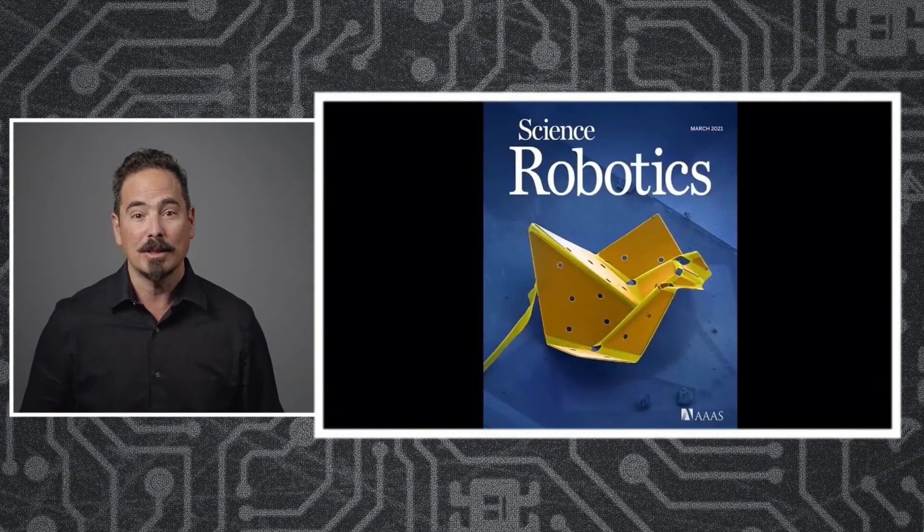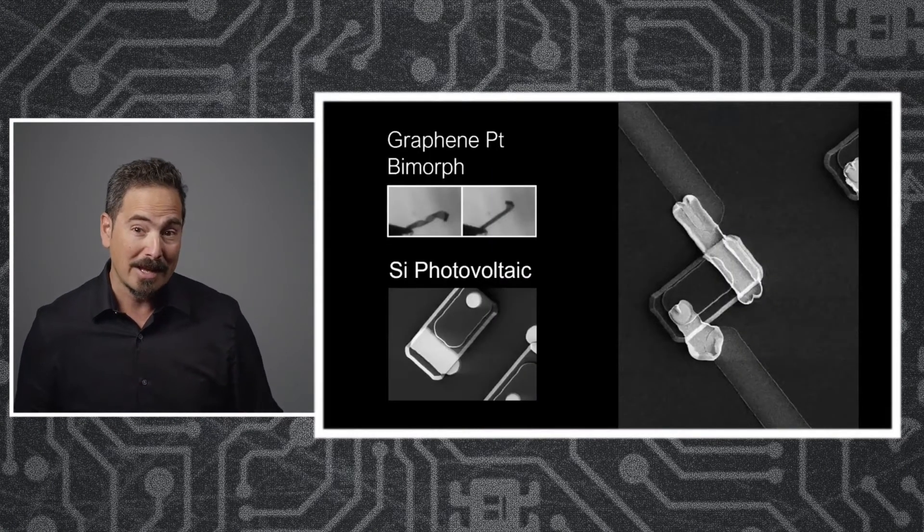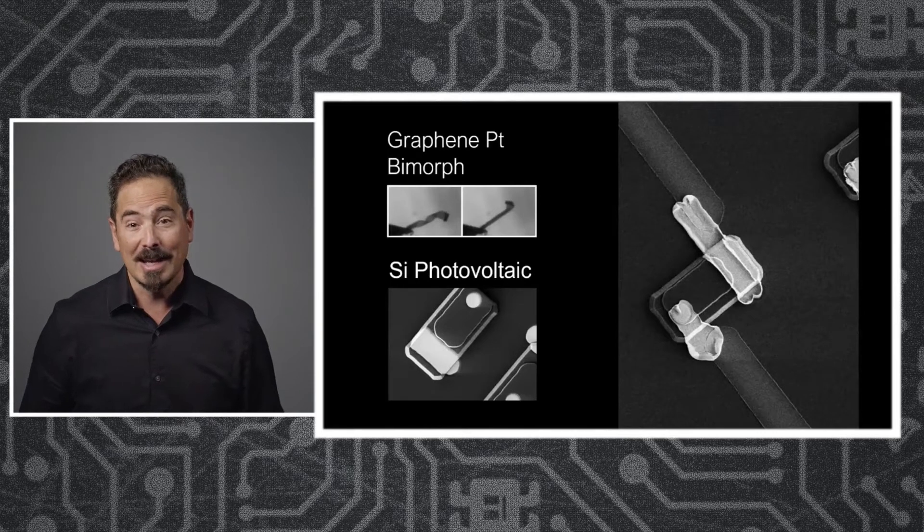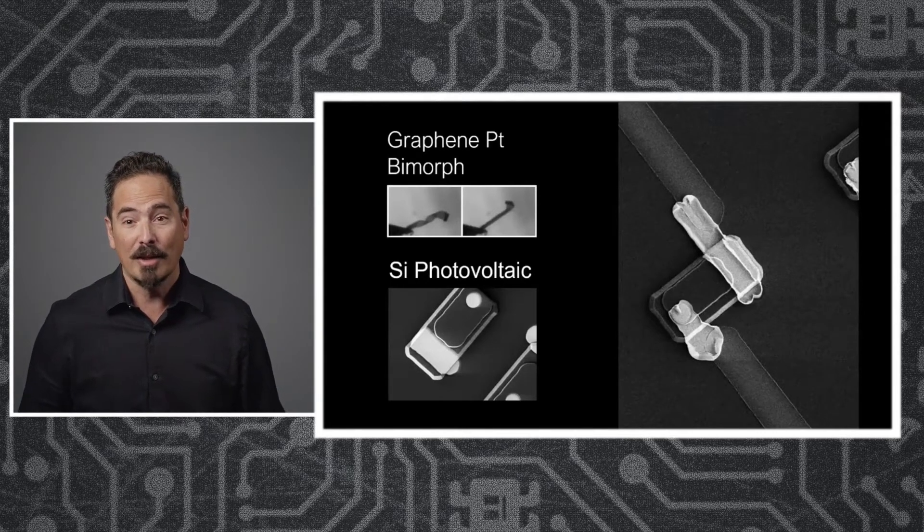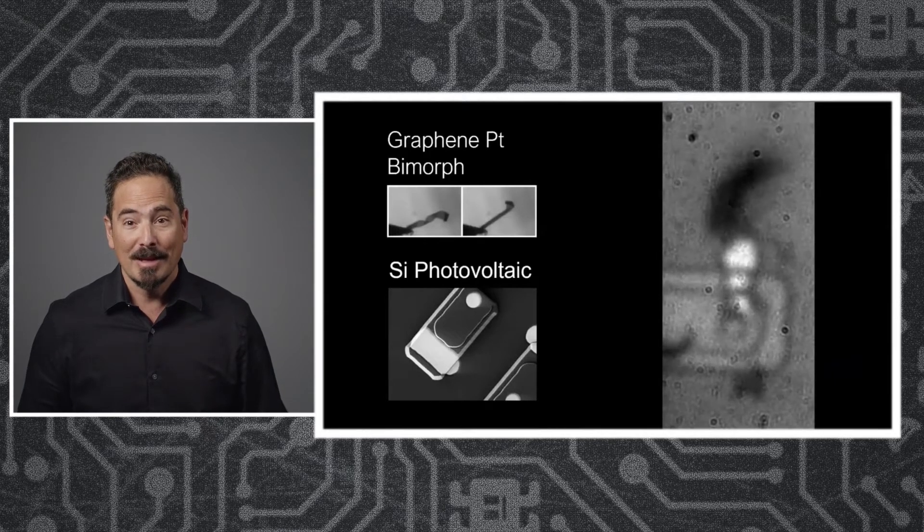So this is how we do it. You essentially create a photovoltaic or a solar panel and connect that up to the actuator, so that when you shine light on the solar panel, it moves the limb.